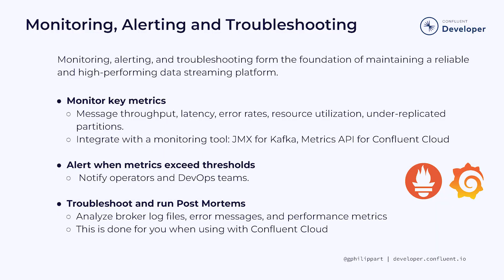One of the main objectives when operating a data streaming platform is to maximize the uptime. Monitoring, alerting and troubleshooting are the foundations to maintain a reliable and high-performing data streaming platform. The first step is to monitor key metrics like throughput, latency, error rates and resource utilization. Plug your favorite monitoring tool right into Apache Kafka via JMX, or use the metrics API if you're using Confluent Cloud.